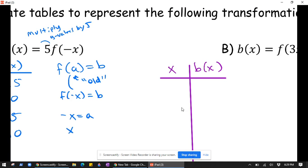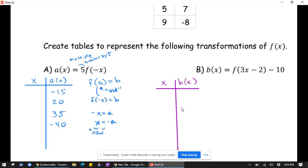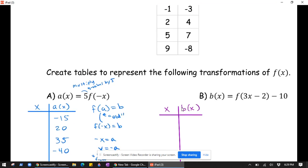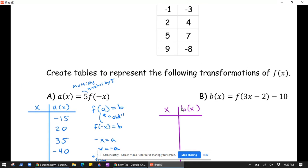Telling us that x equals negative a. So our new x values are just going to be the opposite of our old ones. So we go up to our table and we take the opposite of our old x values. The opposite of negative 1 is positive 1, the opposite of 2 is negative 2, negative 5, and negative 9. And there is our table for A.